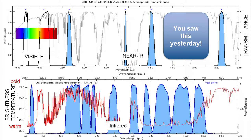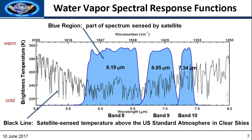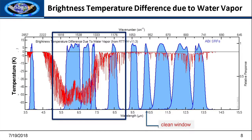Notice the 7.34 is a little more narrow as well. Typically, as these channels get broader you're sampling a bigger depth of the atmosphere. The 6.19 is sampling a pretty big depth because it's a broad channel, while a more narrow channel looks at a vertically more compressed region. Here are the spectral response functions showing what the satellite would detect at all these wavelengths above a U.S. standard atmosphere in clear skies. The brightness temperature difference solely due to water vapor is shown here.